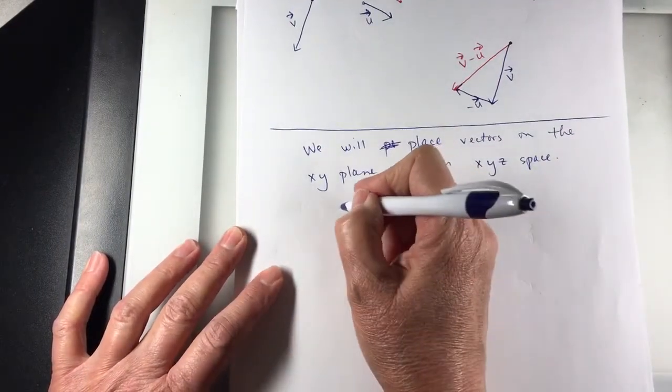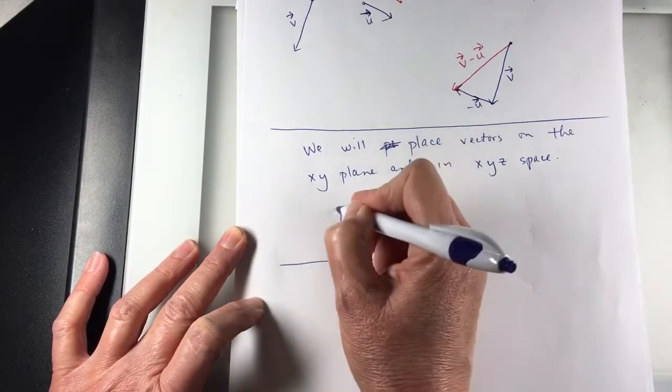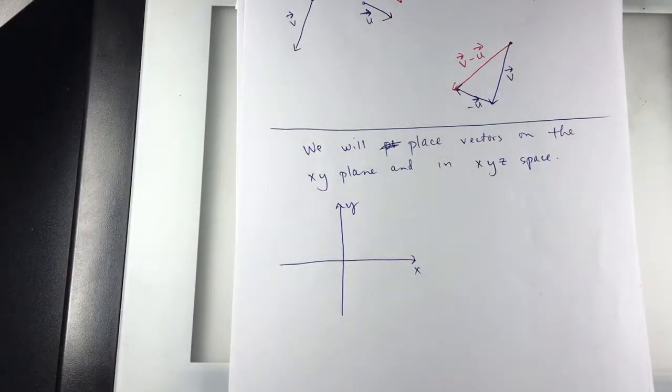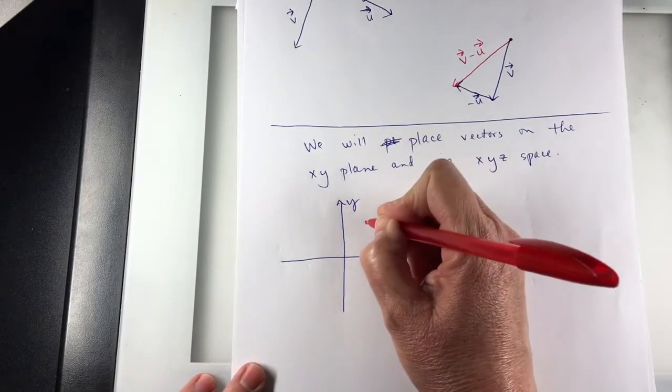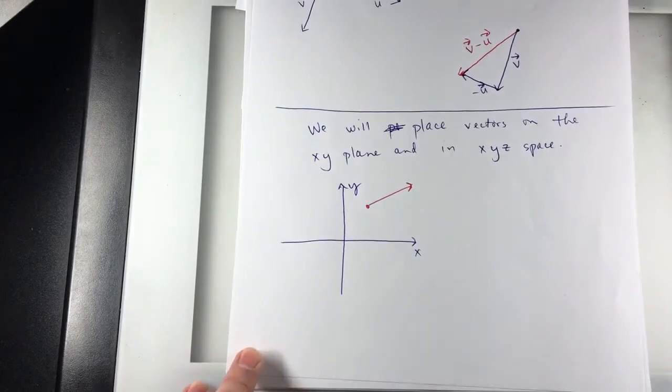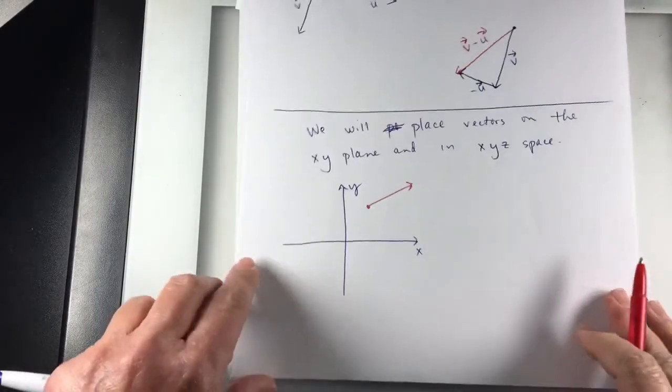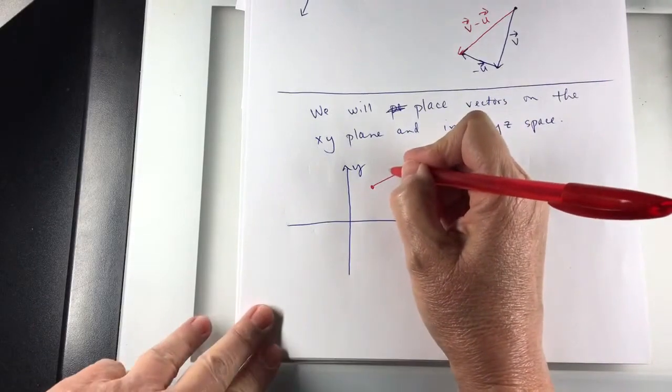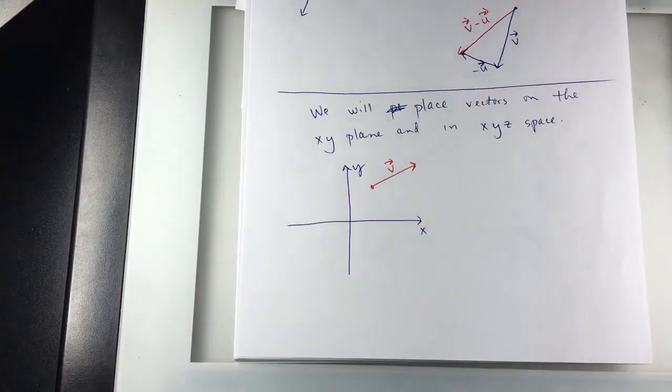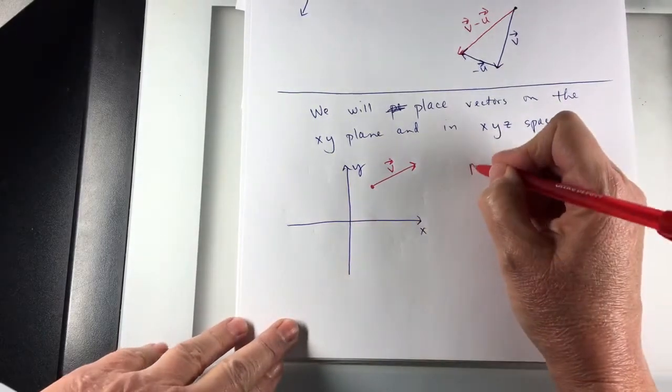So if I'm working with just x,y, I might have a vector like this. Now, a vector that's parallel to this and the same length, that points in the same direction, is equivalent to this vector. So if this is vector v, I want to take vector v and I want to move it so that the initial point is at the origin.